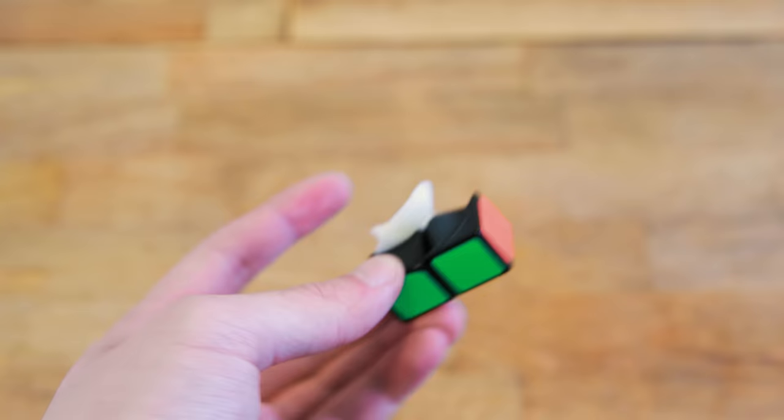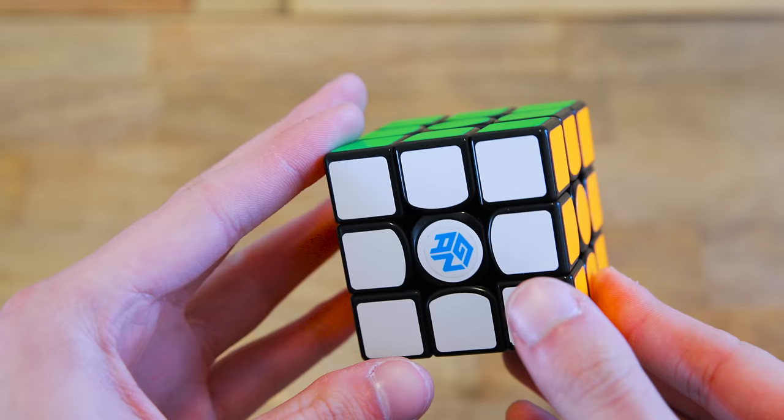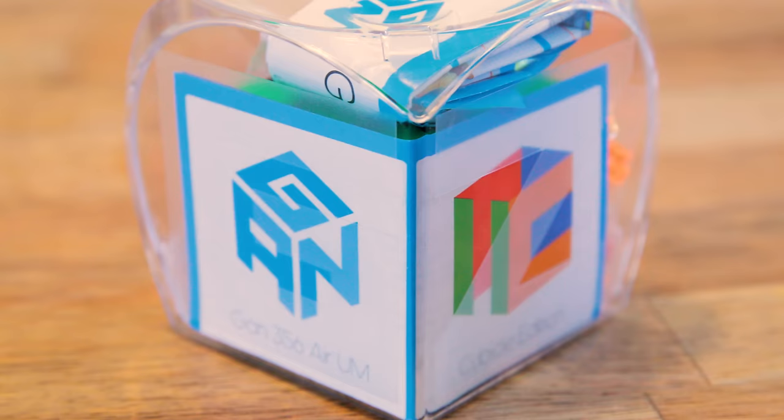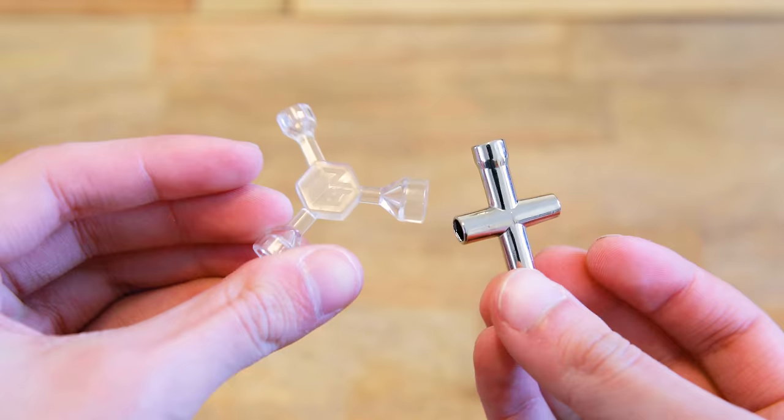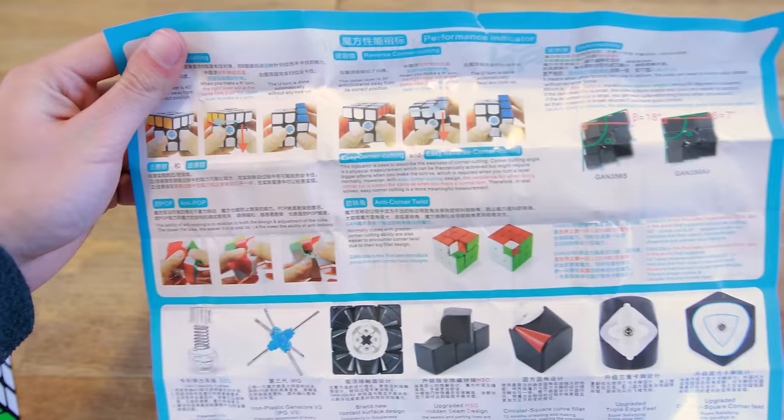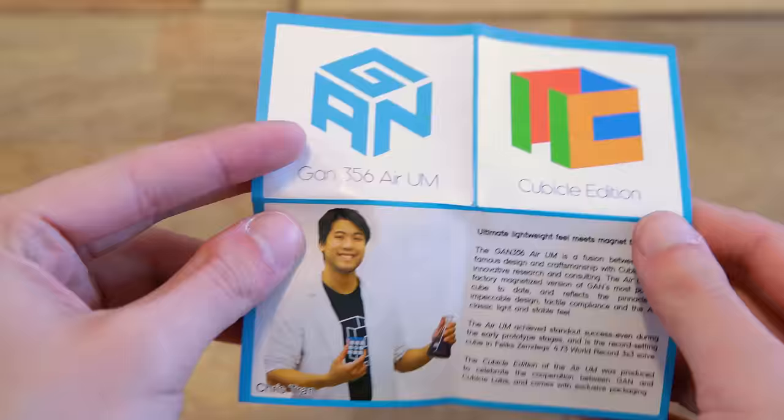The AIR UM is priced at $47.37 to commemorate Felix's record, and comes with a nice bright set of stickers and purple GES nuts installed. The cube comes in a traditional GAN box, and is packaged with the 6 other types of GES nuts, a metal tensioning tool, a plastic tensioning tool, and a GAN pamphlet. The cubicle edition of this product also comes with an exclusive pamphlet that we designed.